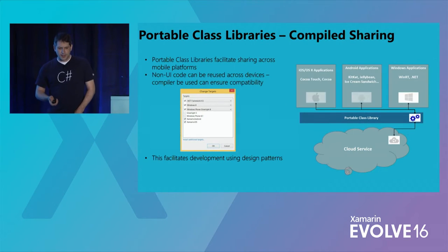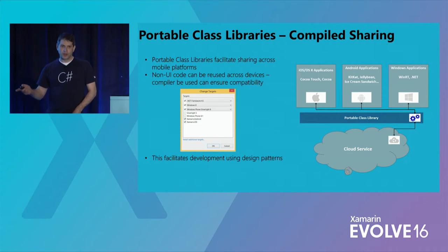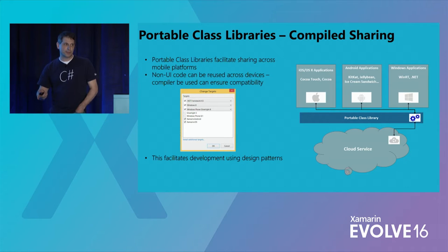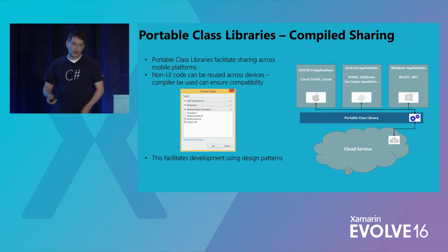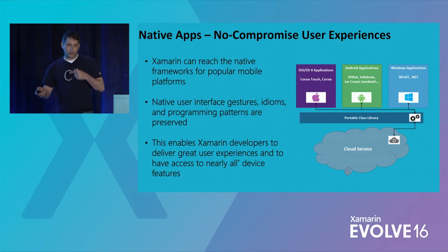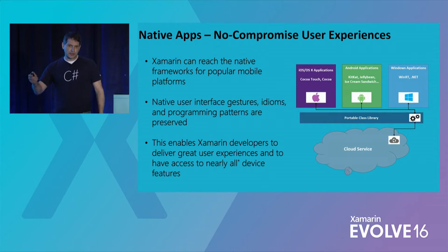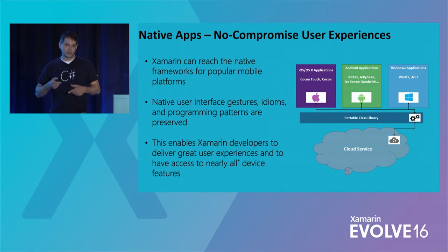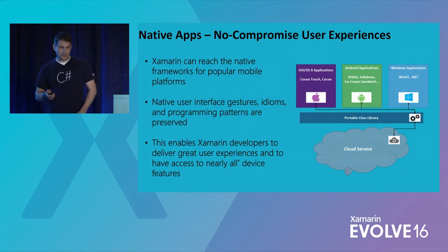As a mobile developer, you unify in the C# programming language using the Mono framework, and you can target all these different mobile platforms. One way to build on the Xamarin stack is to put all your non-UI code into a Portable Class Library. The compiler makes sure you're only using specific types that work across all those platforms. You can then build great native user experiences for any platform by putting a native head on top — still programming to Cocoa Touch, Lollipop, KitKat, or Jellybean, but in C#.